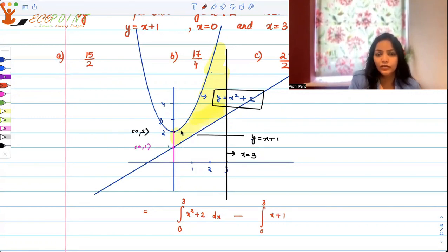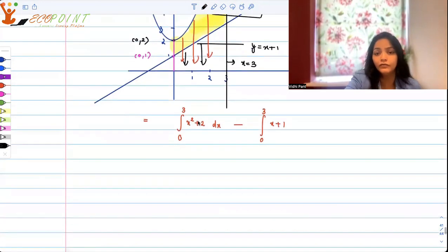So if you take this entire area and subtract the area under this line, you will be left with this yellow region. And that's what we have to figure out.